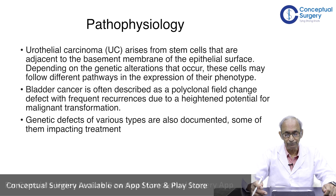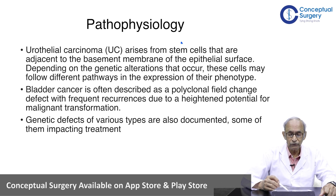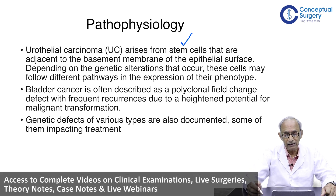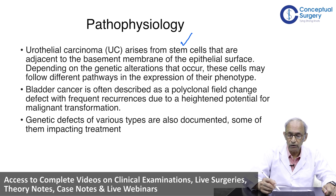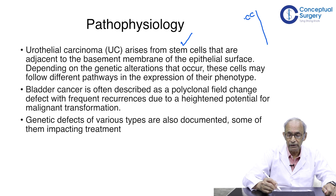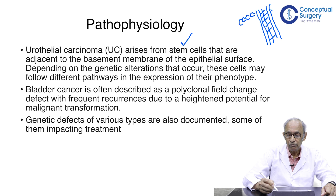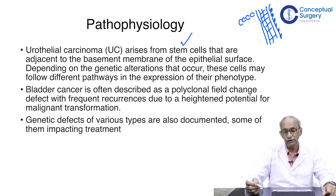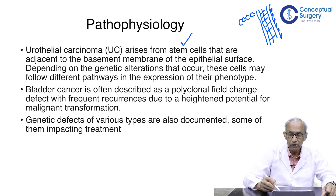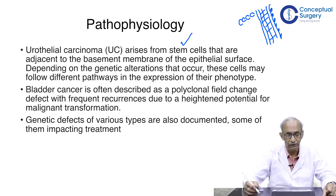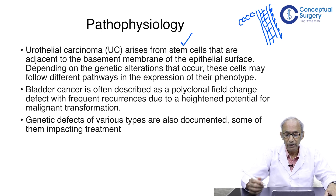Let us briefly look at the pathophysiology. Urothelial carcinoma arises from stem cells located just adjacent to the basement membrane of the epithelial surface. If you draw the wall of the bladder, you see about 3 to 5 layers of epithelium, then the basement membrane, then the lamina propria, then the superficial and deep muscles, and then the perivesical tissues with fat around. The stem cells are located adjacent to the basement membrane, and depending on the genetic alterations that occur, these cells follow different pathways in the expression of their phenotype.